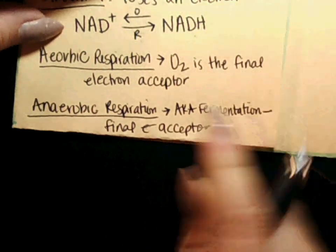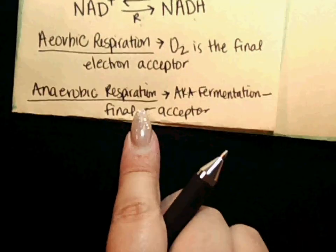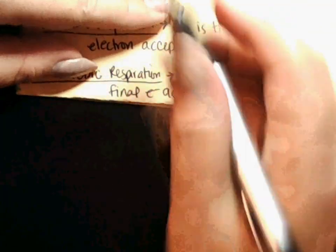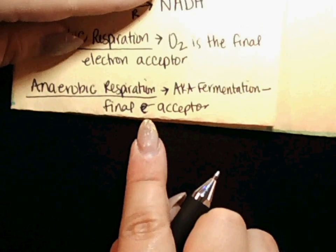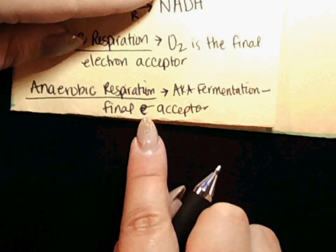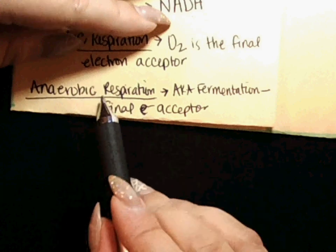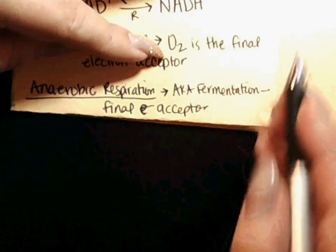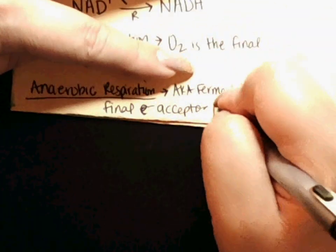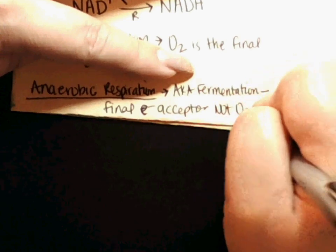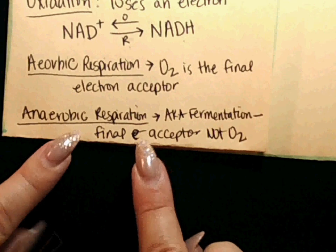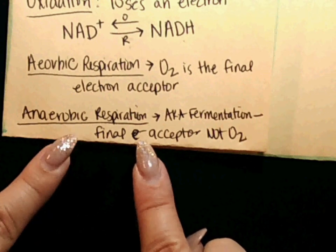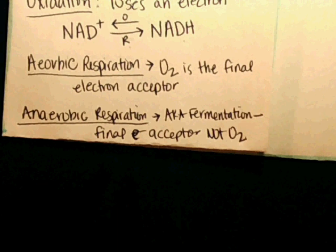When you see me write 'e-' that means electron. In anaerobic respiration the final electron acceptor is something other than oxygen. We'll talk about the products of anaerobic respiration and why these processes are so important. I hope this video was helpful — thanks for watching!